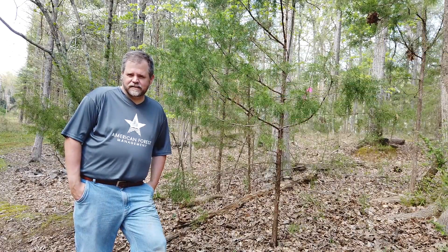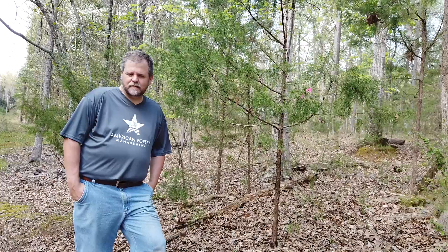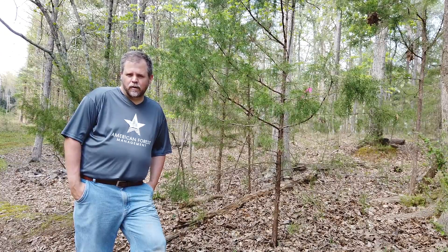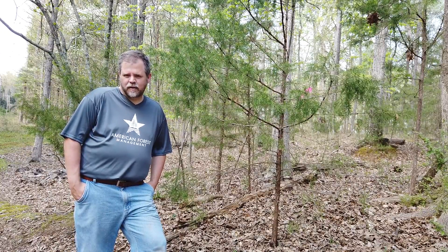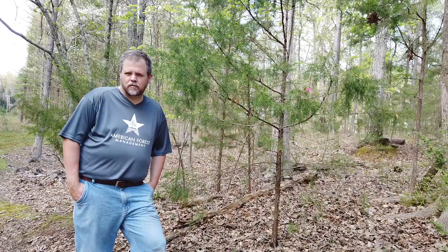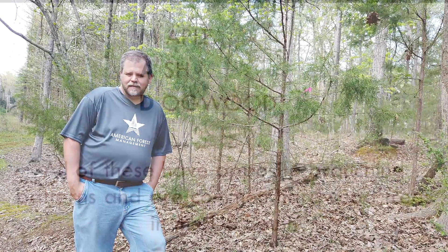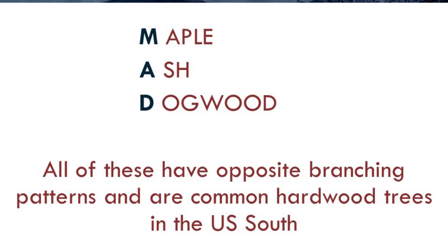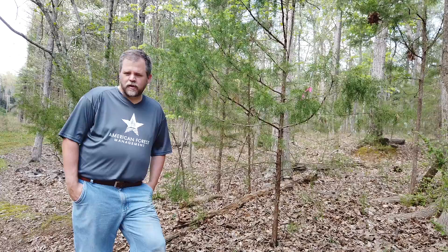Our first lesson is going to be in trees that have an opposite branching pattern. What that means is that the branches come off directly across from each other. An easy way to remember this is the acronym MAD — M-A-D. That stands for Maple, Ash, and Dogwood. So we're going to go through it that way.